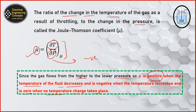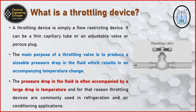Now let's come to the throttling process. It is simply a flow-restricting device — a simple valve. It can be a thin capillary tube, an adjustable valve, or simply a porous plug. The main purpose of this valve is to produce a sizable pressure drop of the fluid, which results in an accompanying temperature change.